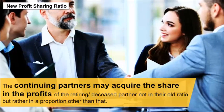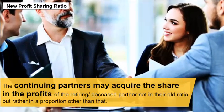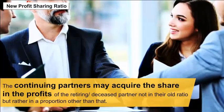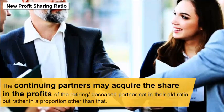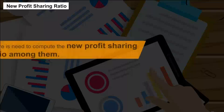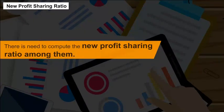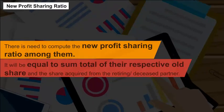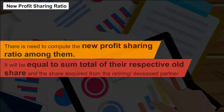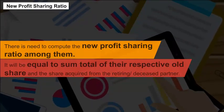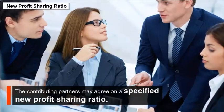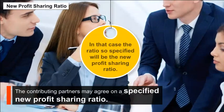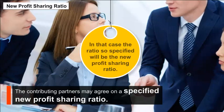The continuing partners may acquire the share in the profit of the retiring or deceased partner not in their old ratio but in a proportion other than that. In such cases, there is a need to compute the new profit sharing ratio, which will equal the sum of their respective old share and the share acquired from the retiring or deceased partner. If the contributing partners agree on a specified new profit sharing ratio, then that specified ratio will be the new profit sharing ratio.